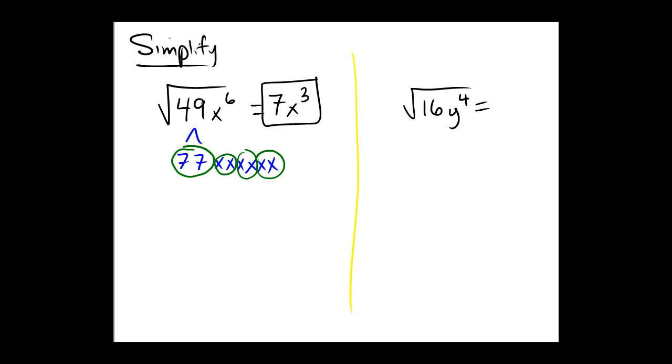And do the square root of 16y to the 4th. We're going to acknowledge that this is the square root of 16 multiplied by the square root of y to the 4th. And that's from the rule about radicals, that the square root of a times the square root of b is the square root of ab.